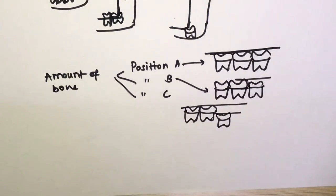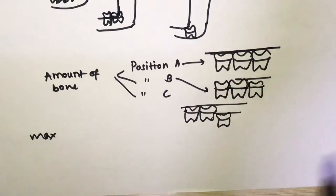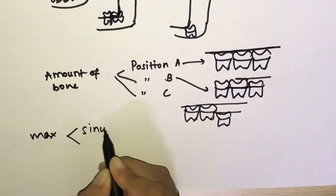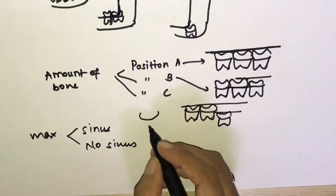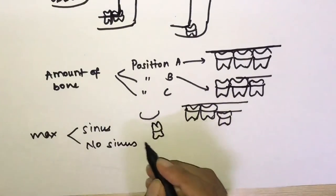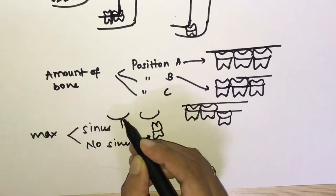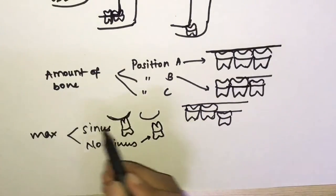For maxillary molars, classification again uses Winter's angulation classification and the depth classification (positions A, B, C). An additional classification specific to maxilla is sinus approximation: if the roots of the molar are in close approximation with the maxillary sinus, it is 'sinus approximation'; otherwise it is 'no sinus approximation.'